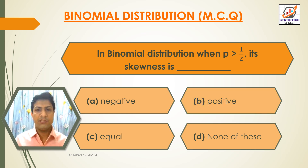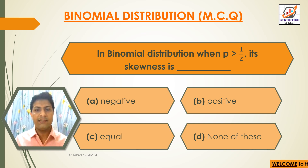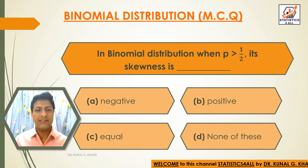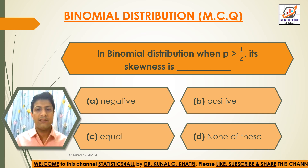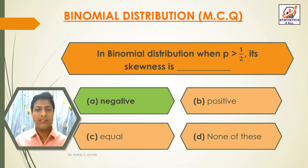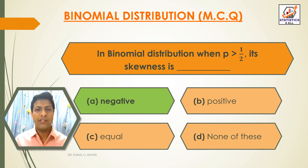Next question: In binomial distribution, when p is greater than half, its skewness is dash. Option A: Negative. Option B: Positive. Option C: Equal. Option D: None of these. The answer is option A — Negative. In binomial distribution, when p is greater than half, its skewness is negative.